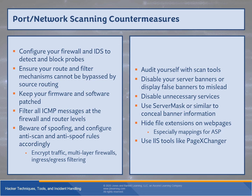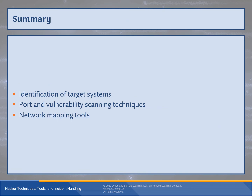So what did we do today? We did our identification process — looked at how to identify target systems, looked at port vulnerability scans, and looked at some network mapping tools. Hopefully you found it interesting and learned some stuff. There will definitely be some interesting times with the Chapter 6 labs. If you have any questions or concerns, contact me through Google Voice, email, Blackboard, or come by the office. Hope you had a good one, and I will talk to you guys next class.